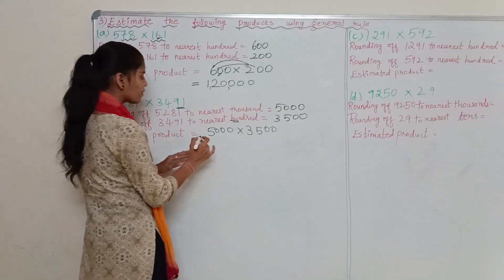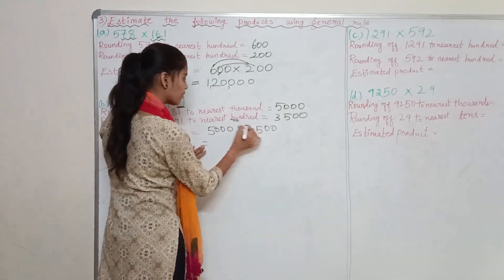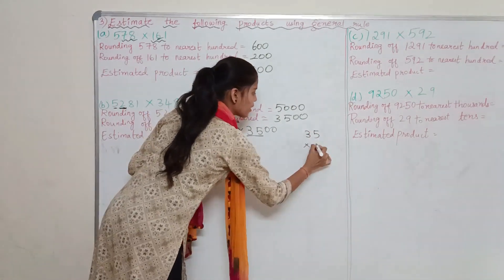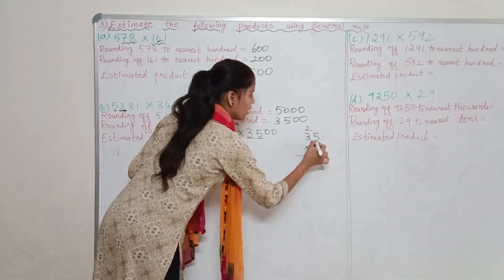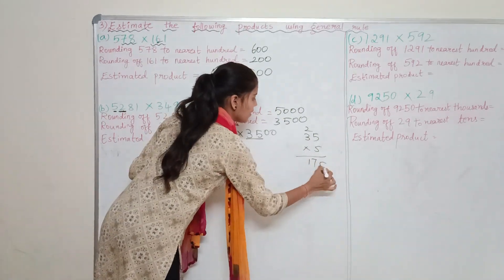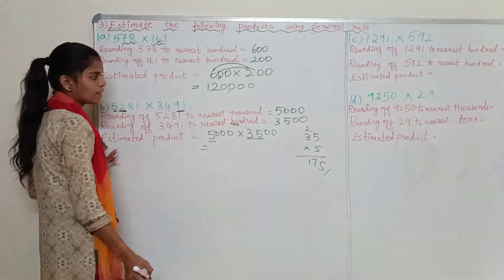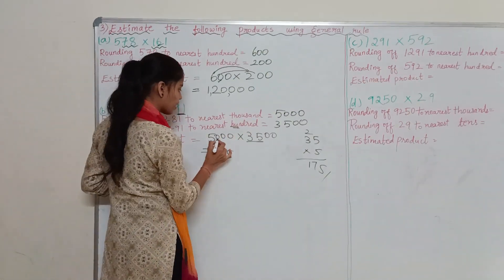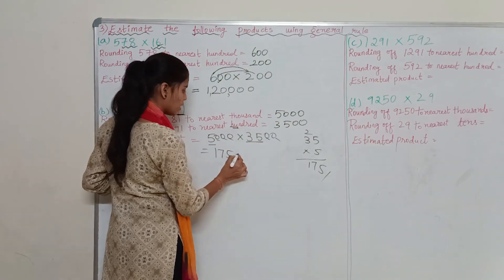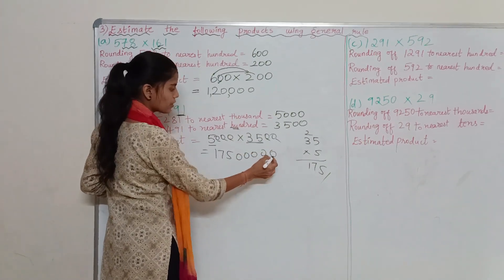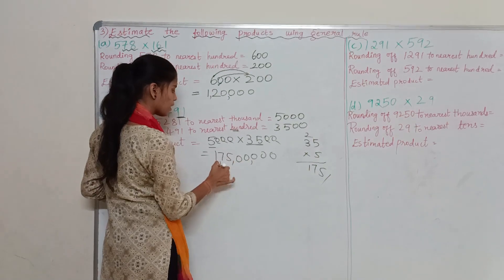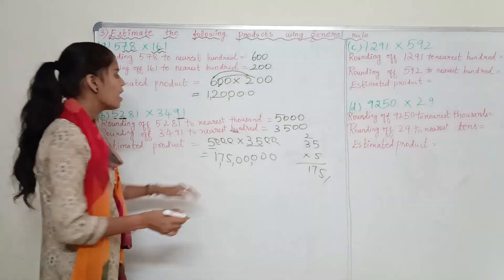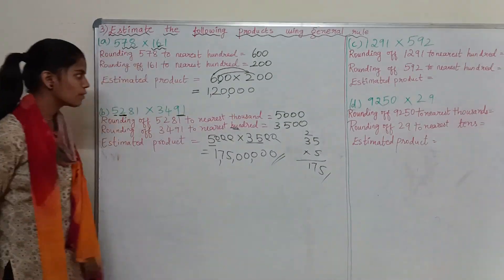So now we compute 5,000 × 3,500. We do 35 × 5: 5 × 5 is 25, carry 2; 5 × 3 is 15, plus 2 is 17. So 35 × 5 = 175. There are 5 zeros in total, giving us 1,75,00,000 — that is 1,75 lakhs — as the estimated product.